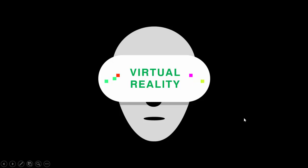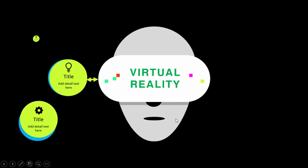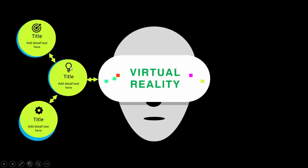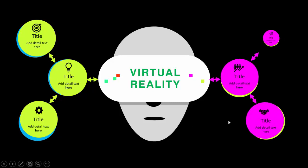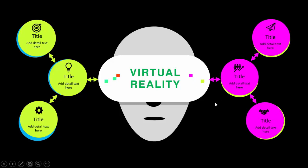This will keep on blinking, and when I click on the left it will show three options where you can add the title, the icon, and the detailed text. On the right it will show three different options with a different color. Depending on your requirement you can increase or decrease these options.